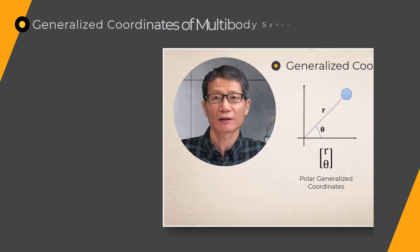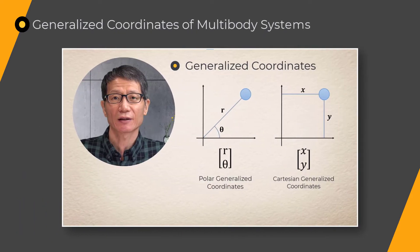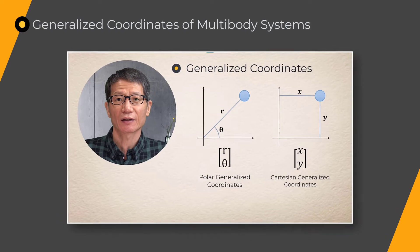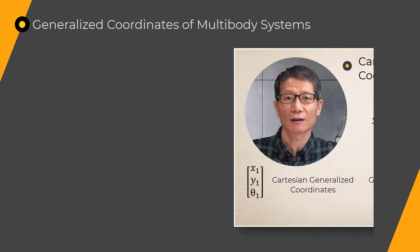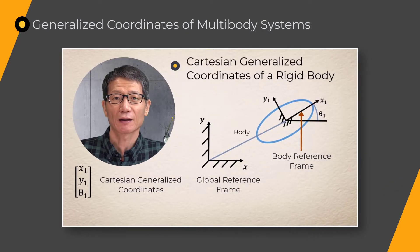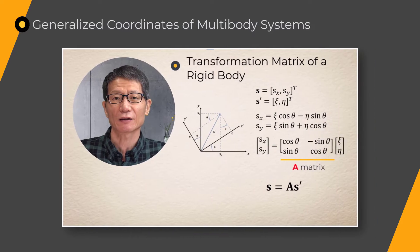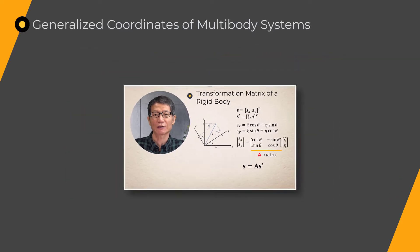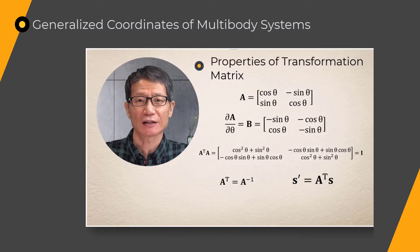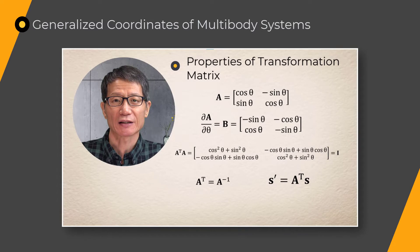Lesson 1 presents Generalized Coordinates, Cartesian Generalized Coordinates of a Rigid Body, Orientation Transformation Matrix of a Rigid Body, and Properties of Orientation Transformation Matrix.